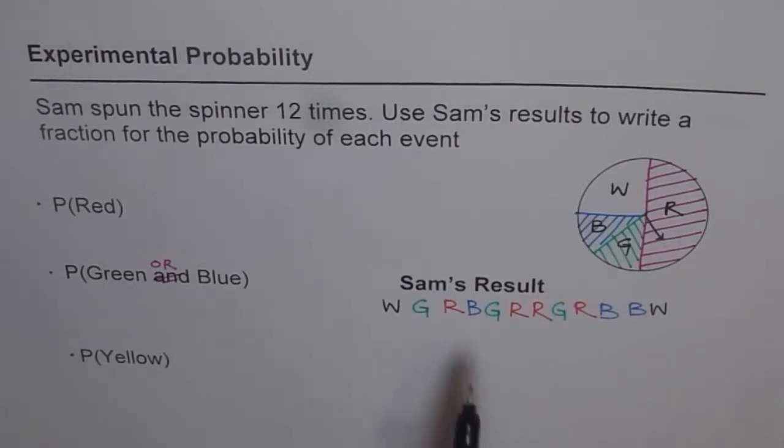Now Sam's results are written here, which means in 12 spins he got: first he got white, green, red, blue, green, red, red, green, red, blue, blue, and white. So these are Sam's results.